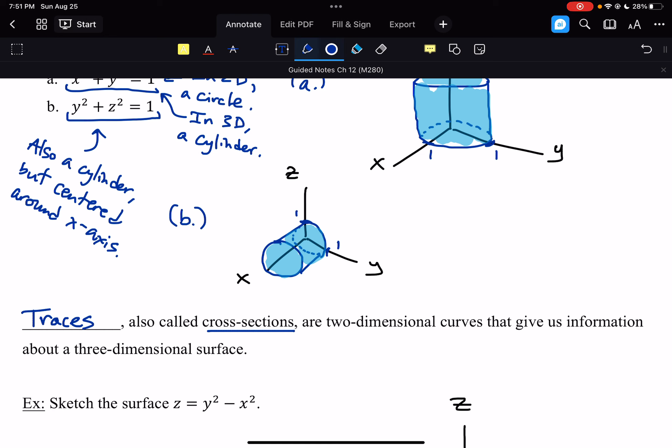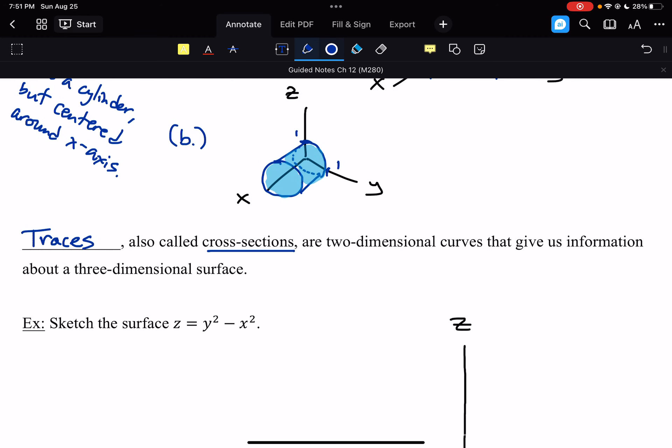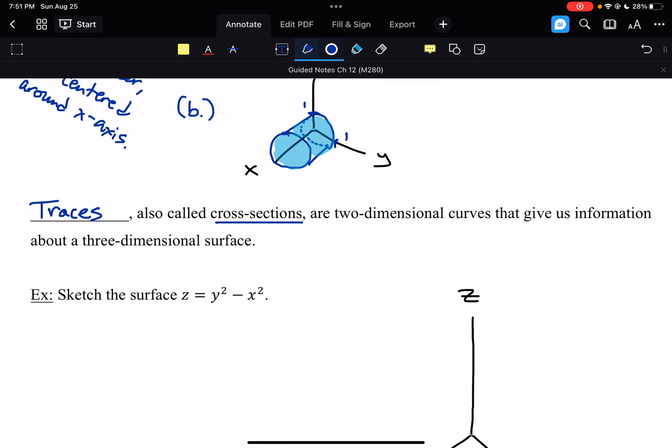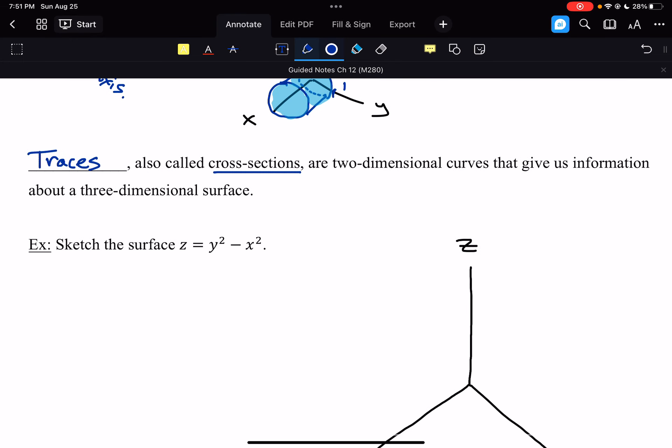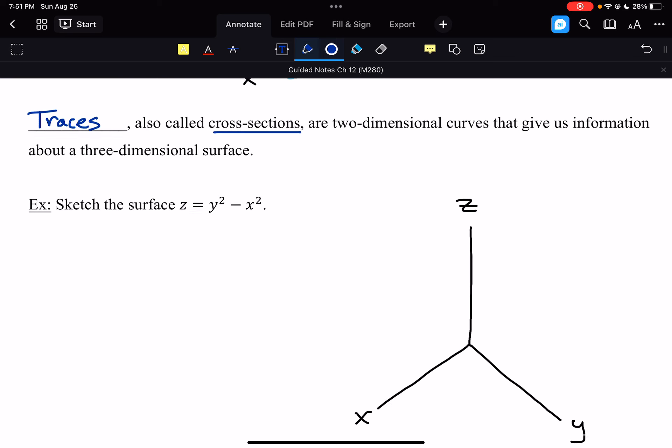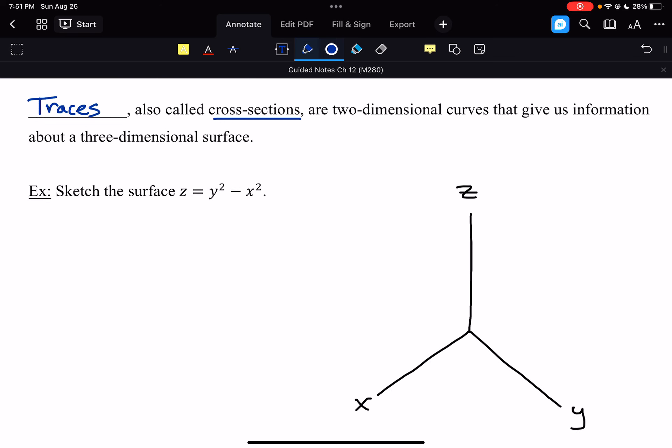In essence, what we're going to do is we're going to take some two-dimensional curves in different directions and use those to kind of piece together what a 3D surface would look like. And it's much more effective than just plotting points. Because if you plot points on a graph in 3D, there's no way to know exactly how they connect, unless you already understand the surface. So, we want to sketch the surface z equals y squared minus x squared. I'm going to plot some different z values here.